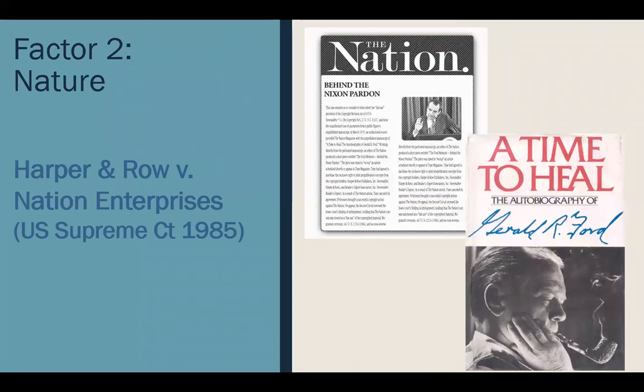With the fourth factor — market effect — the court found this also weighed against fair use for The Nation, because The Nation in fact scooped Time Magazine, which was an arrangement Harper & Row had put together themselves. Because The Nation had already published the content, Time Magazine had no interest in publishing it, leading to actual, demonstrable harm to Harper & Row — Time canceled the publishing contract. The court found no fair use on any of the four factors, and decided for Harper & Row.